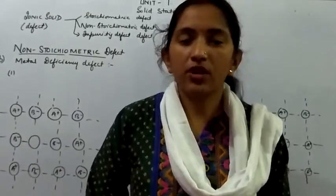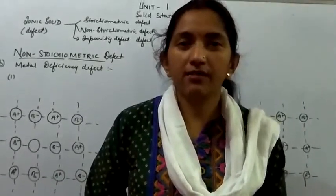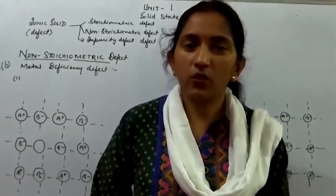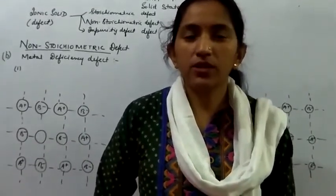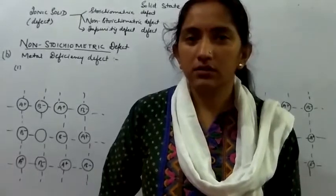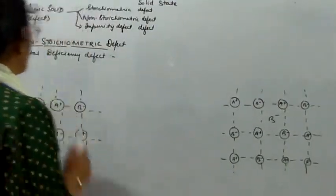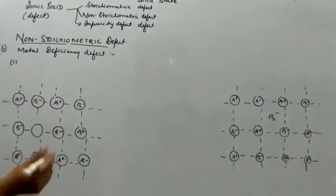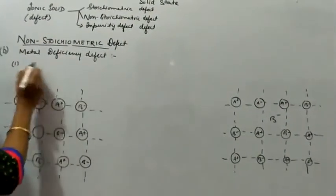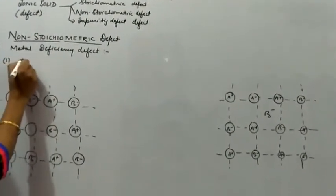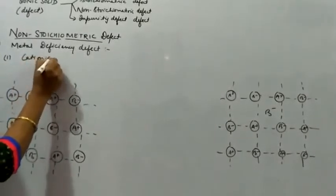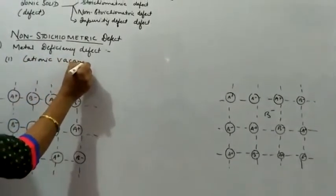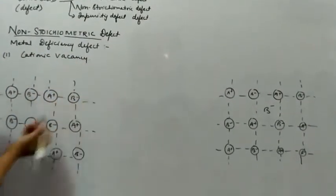The next type of nonstoichiometric defect is metal deficiency defect, where the number of metal ions is less with respect to that of the anions. Metal deficiency defect is caused due to two reasons: the first one is due to cationic vacancies.